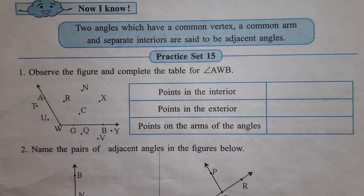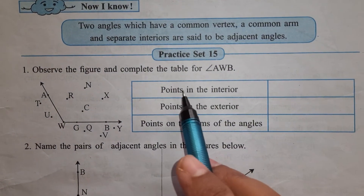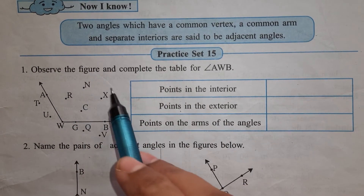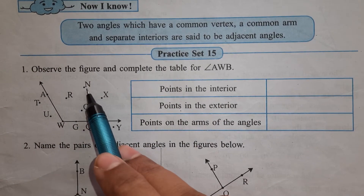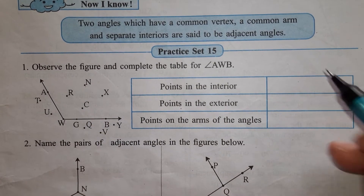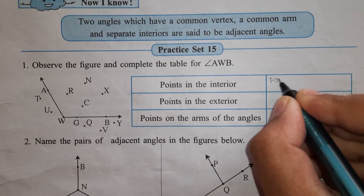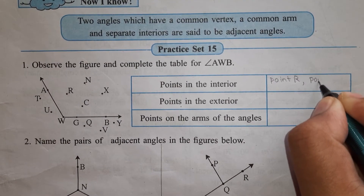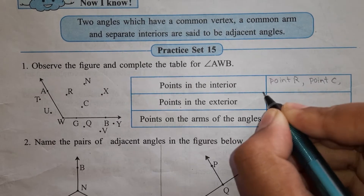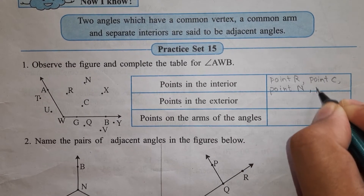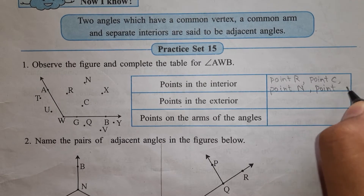Here in practice set 15 we will solve this question. In this figure, which are the points in the interior of the angle? Point N, point X, point C and point R — so point R, point C, point N and point X are the 4 points present in the interior.